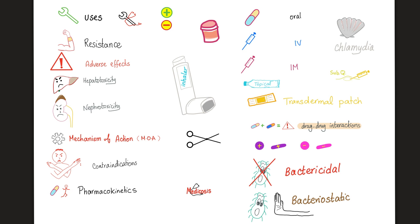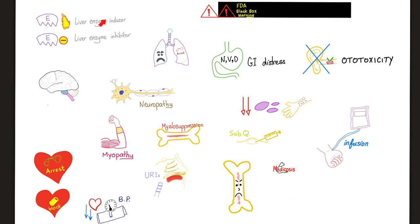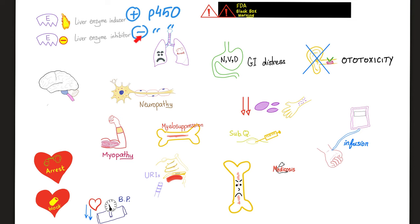This clam means chlamydia. This symbol means the medication is a liver enzyme inducer — meaning an inducer of the P450 liver enzyme system, also known as liver microsomal enzyme. But this means the medication is a liver enzyme inhibitor, an inhibitor of the P450 system. When you are a P450 inducer, you stimulate the metabolism of other medications so they last shorter. But if you are a P450 inhibitor, you inhibit the degradation of other medications so they last longer, causing more toxicities. This means neuropathy. This is myopathy — pathology in the muscles; some medications cause muscle weakness. This means myelosuppression or suppression of the bone marrow.